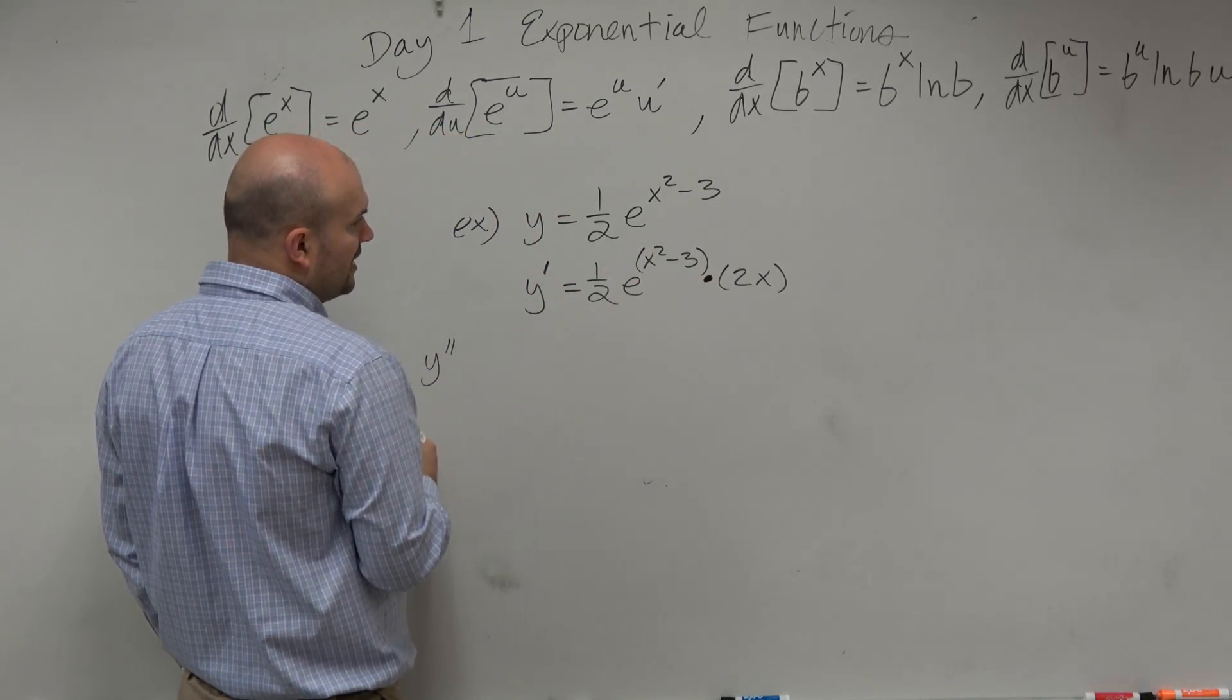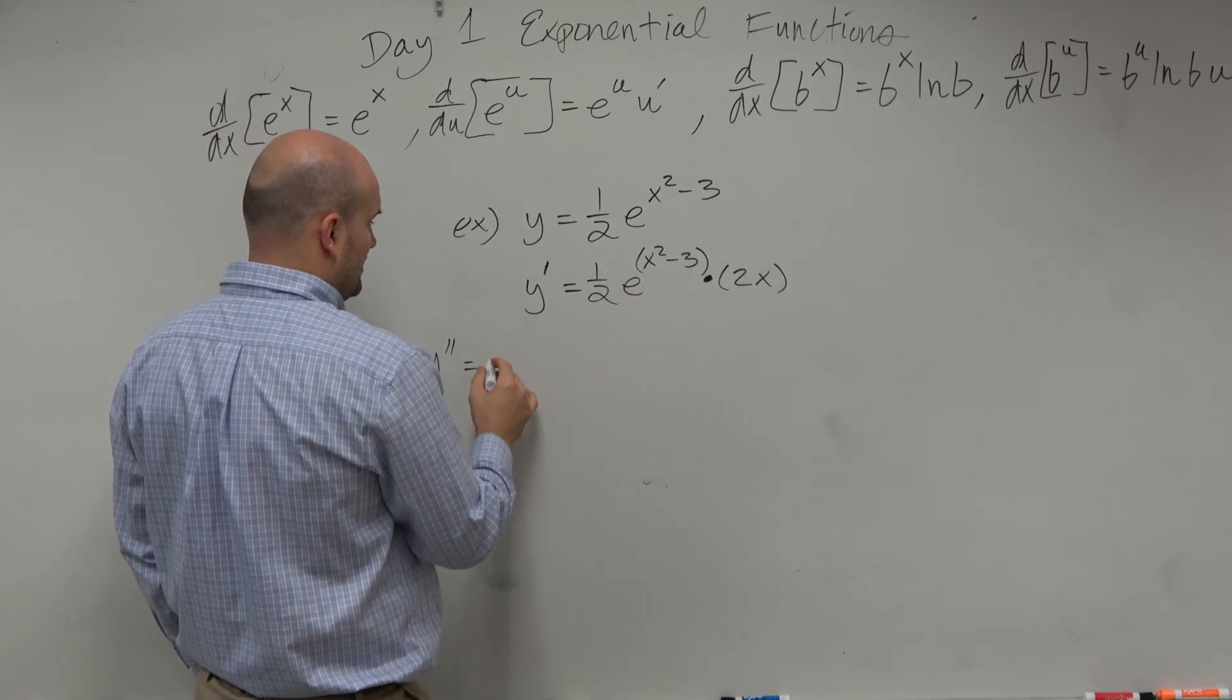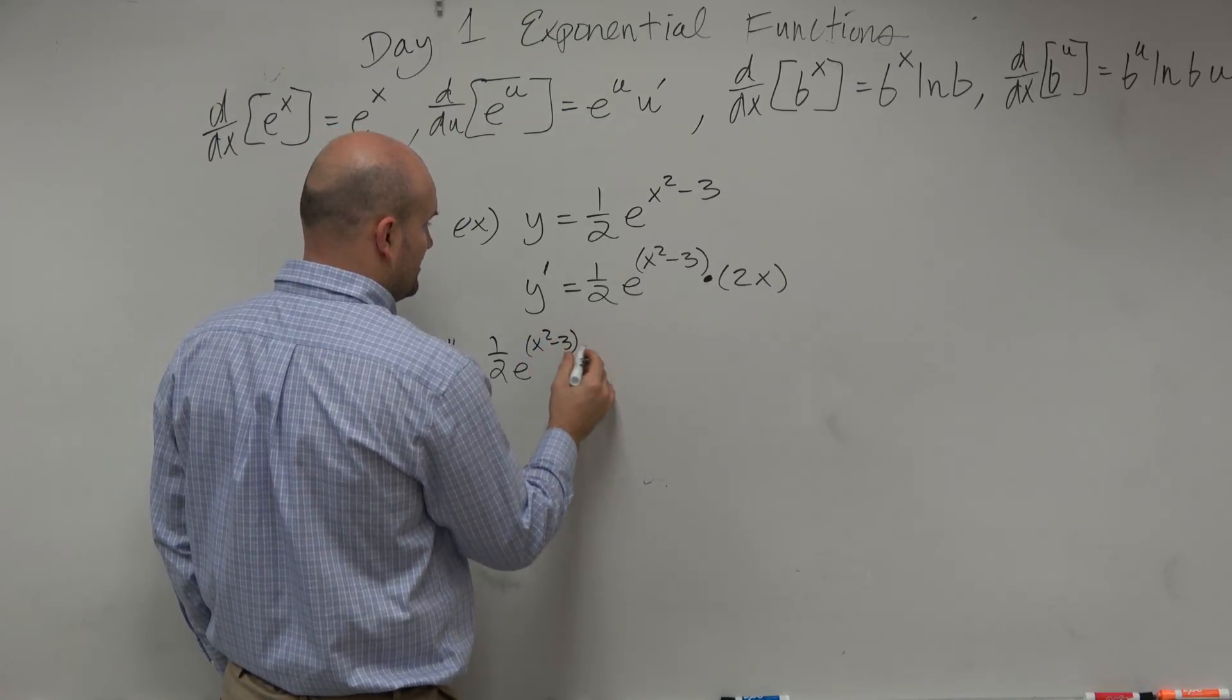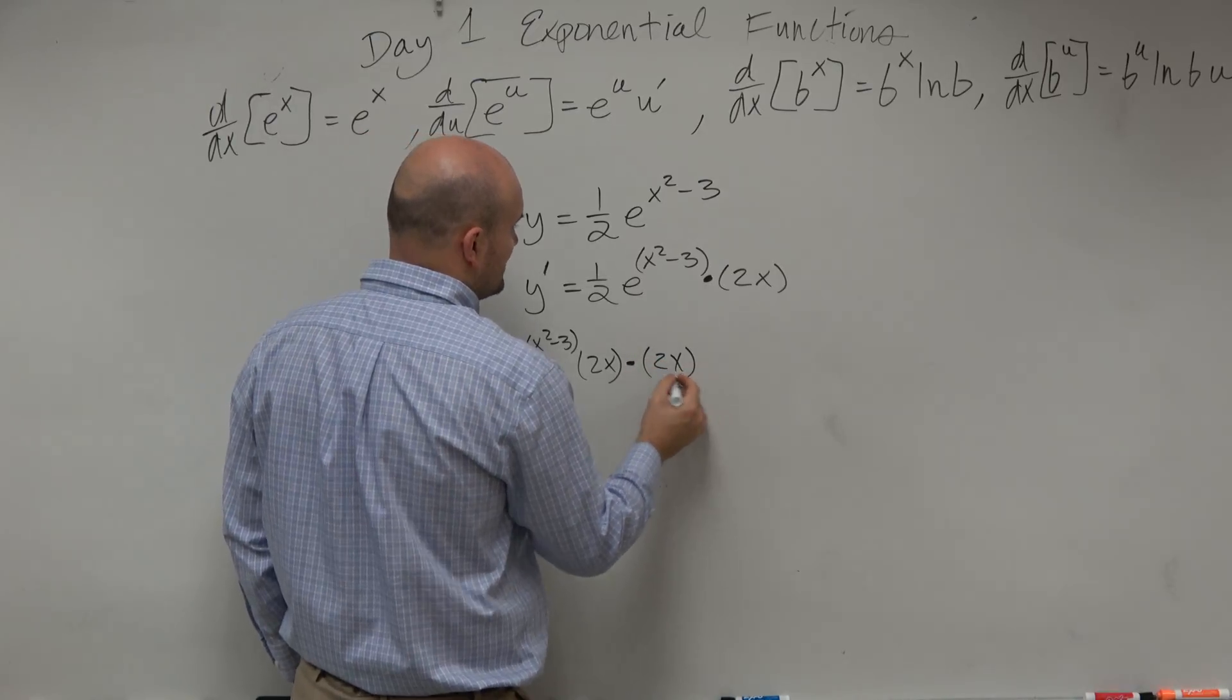So taking the first derivative of my f of x, kind of like my first function, is just going to be, again, 1 half e to the x squared minus 3, then times 2x, then times the second function, which is 2x.